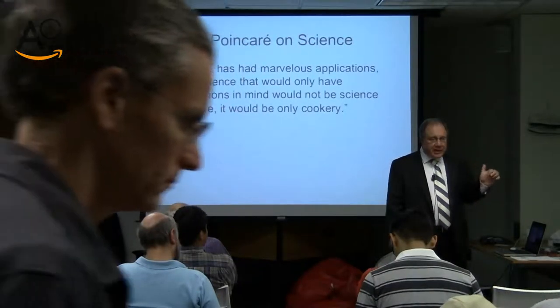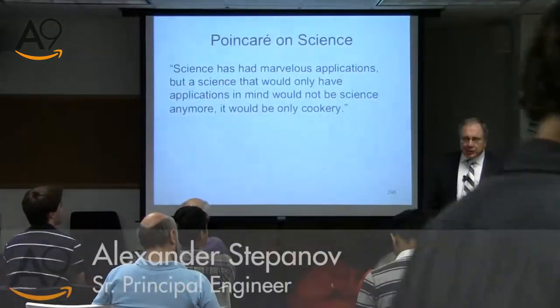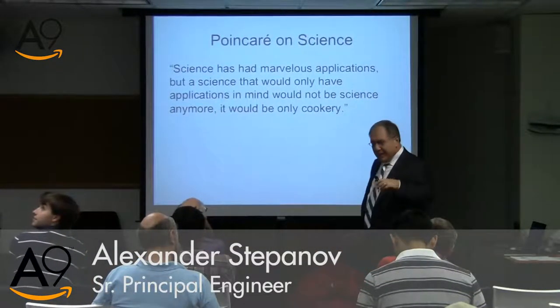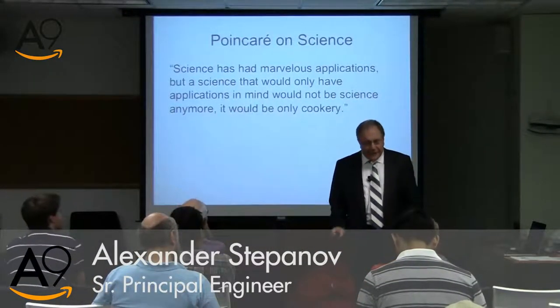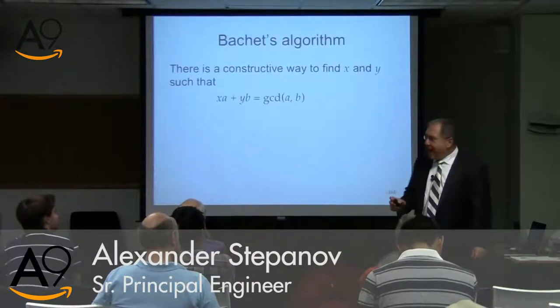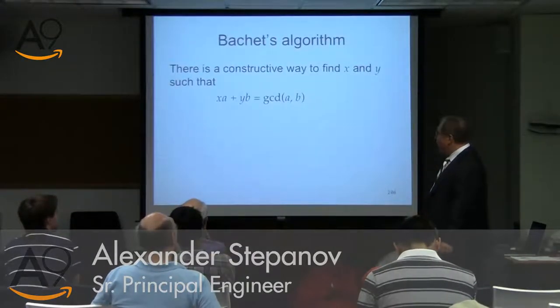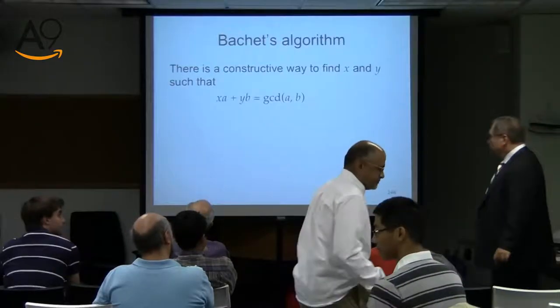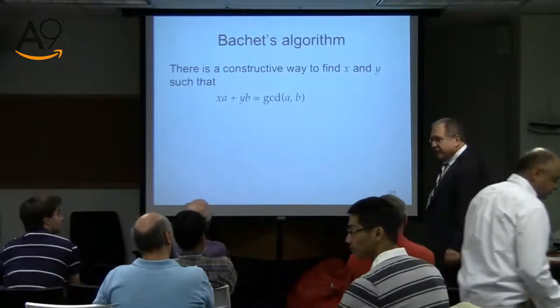We're finished with ideals. We talked about Poincaré, intuitionism, and all of that wonderful stuff. So now let us go and see how we could find X and Y constructively, which is the Bachet algorithm.